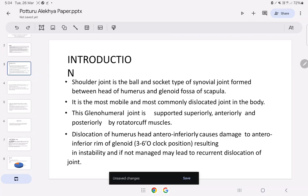Introduction: Shoulder joint is a ball and socket type of synovial joint formed between head of humerus and glenoid fossa of scapula. It is the most mobile and most commonly dislocated joint in the body.